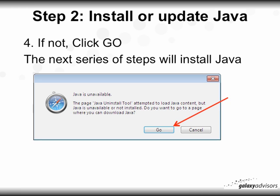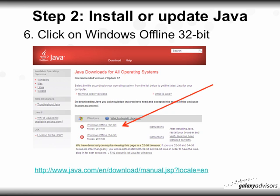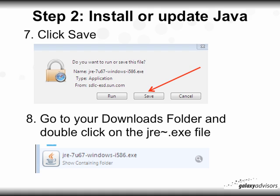The next series of steps will install Java. Click 'Free Java Download' — Java is free. Then click on 'Windows Offline 32-bit' and save the file, which will be named something like jre-7u67-windows-i586.exe. Then go to your Downloads folder and double-click on that JRE executable file.